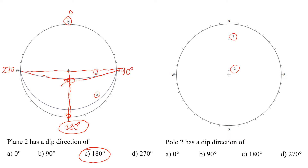Now let's look at the same example but with two poles instead of circles. You might think it's very difficult to determine direction because we only have two poles and don't know which way they face. Actually, we do know. To determine dip direction for a pole, draw a line from the pole that goes through the center, and see where it crosses the circle — in this case it's south, which is 180 degrees. This is the same answer because these are the same discontinuities, just represented differently — either through great circles or through poles.